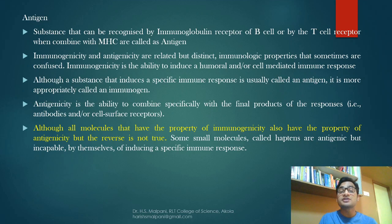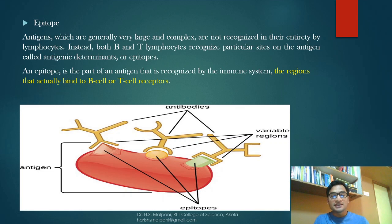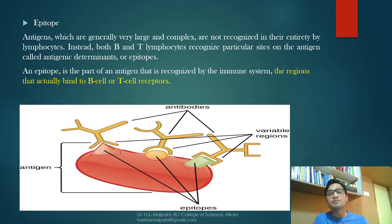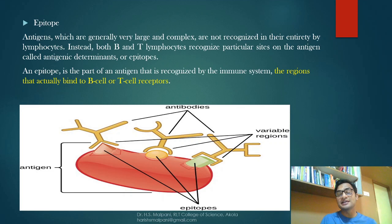In this diagram you can see certain outgrowth-like structures, and those structures are epitopes. Antigens, which are generally very large and complex, are not recognized in their entirety by lymphocytes. Instead, both B and T lymphocytes recognize particular sites on the antigen, called antigenic determinants or epitopes. An epitope is that part of the antigen recognized by the immune system — the region that binds to B and T cell receptors. The region of the antibody that binds to the epitope is known as the paratope.